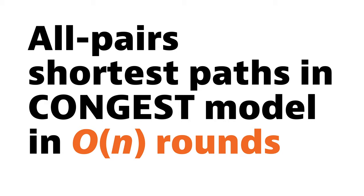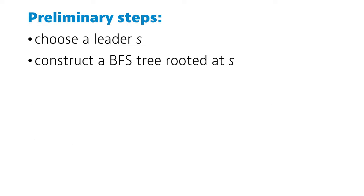But we can do better! There is a linear time algorithm for finding all pairs shortest paths in the congest model, and it's really simple. I'd like to emphasize, we won't get diameter time this way. But at least the running time will be linear in n, and not something like n times diameter. So what do we do?